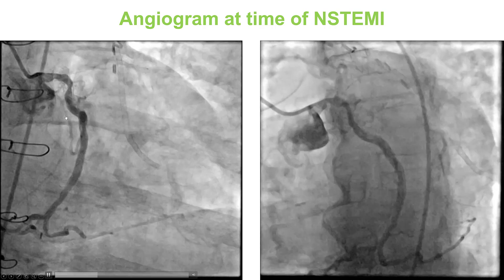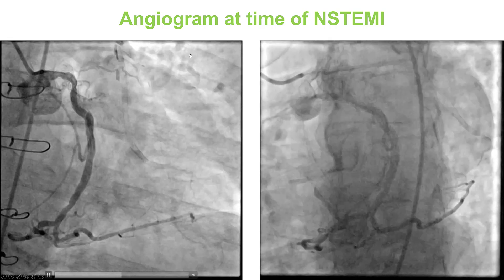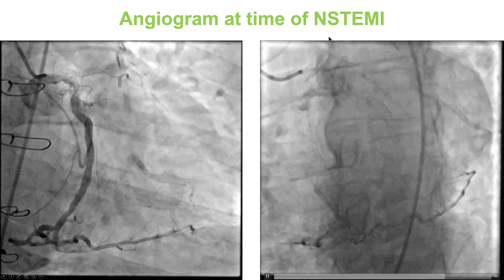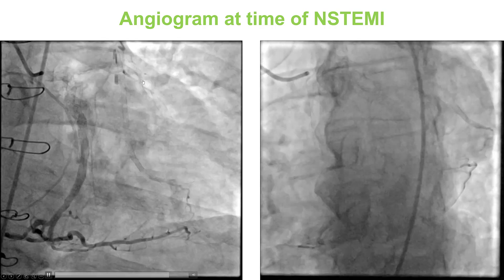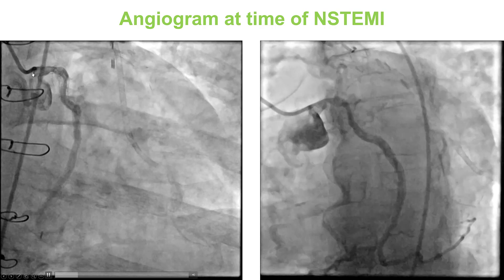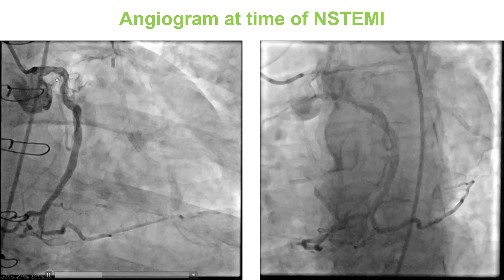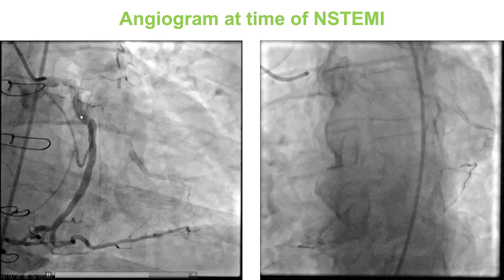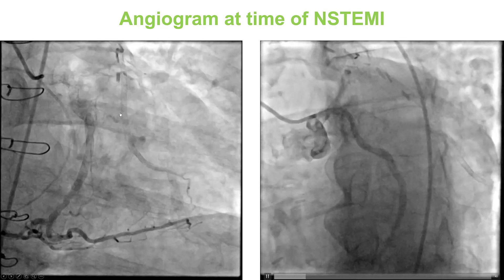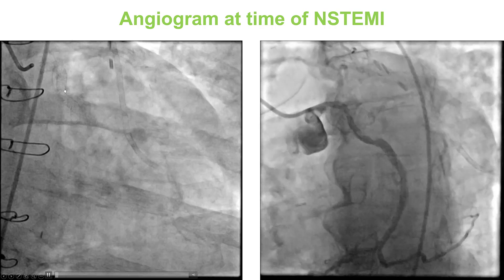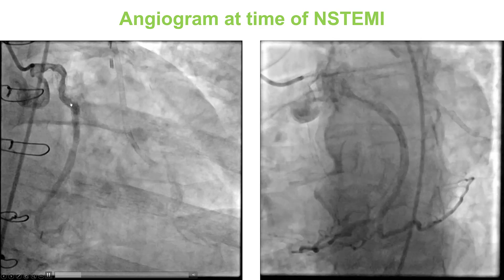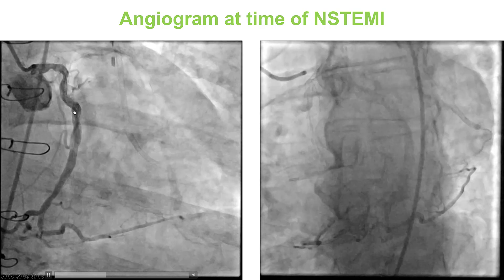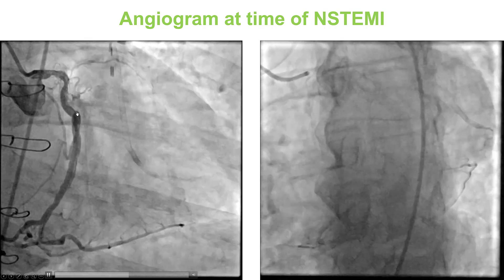The patient had previous coronary bypass and presented with non-ST elevation myocardial infarction because of thrombosis of a saphenous vein graft that was recanalized with thrombectomy and balloon angioplasty. He continued to have significant angina and was referred for PCI of the native obtuse marginal CTO. On baseline angiogram, he had some disease in the left main and a CTO of the obtuse marginal.